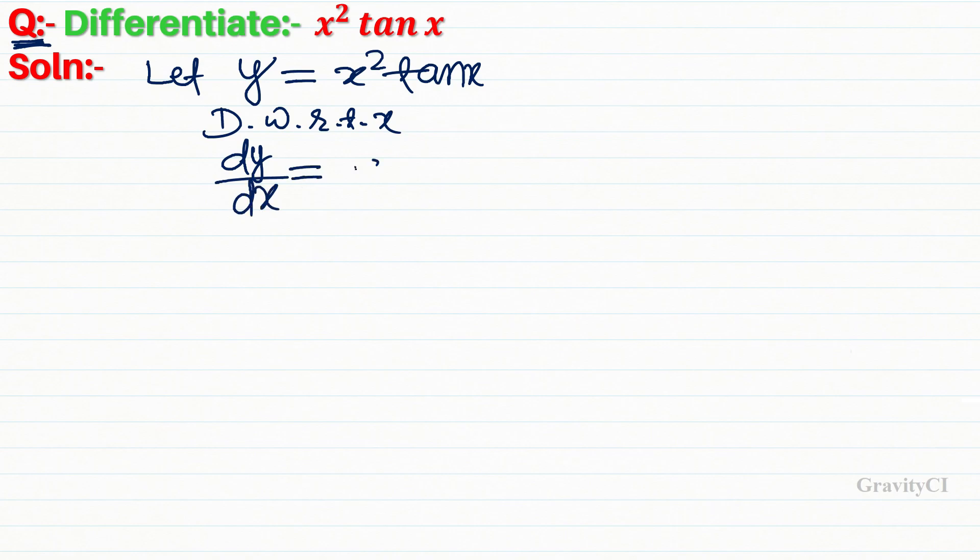dy upon dx equal to derivative of x square into tan x. So, here are two functions, x square and tan x.